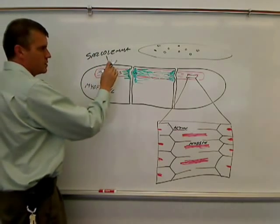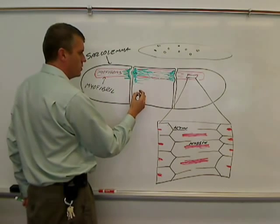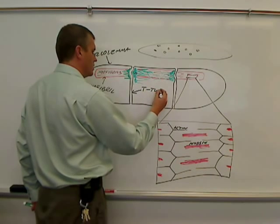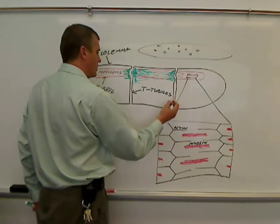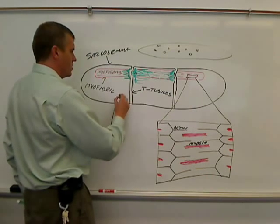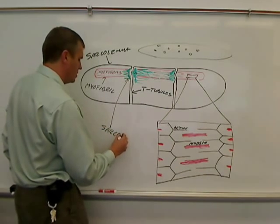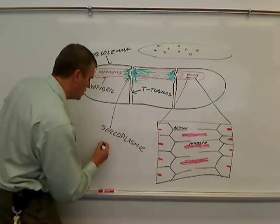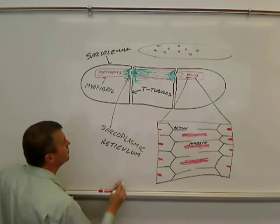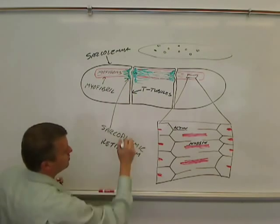And the thick ones are myosin. So again, sarcolemma is the cell membrane. These tubes that go through the cell are T-tubules, or transverse tubules. The sarcoplasmic reticulum I have represented as green in here.